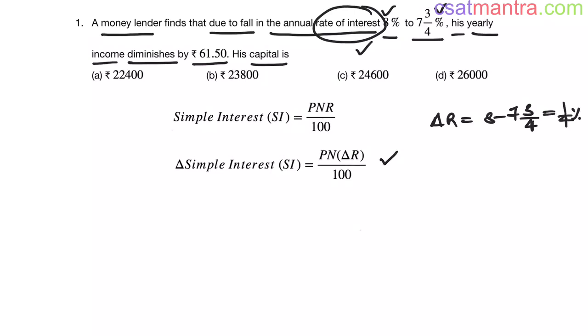Now, when this change happens, his yearly income diminishes, so number of years is 1. Income diminishes by 61.5 rupees. Income means the interest which he is getting on the capital. So that is change in simple interest. Diminishing means change. So what is that 61.50? Now we are asked to find the capital. P we do not know that.